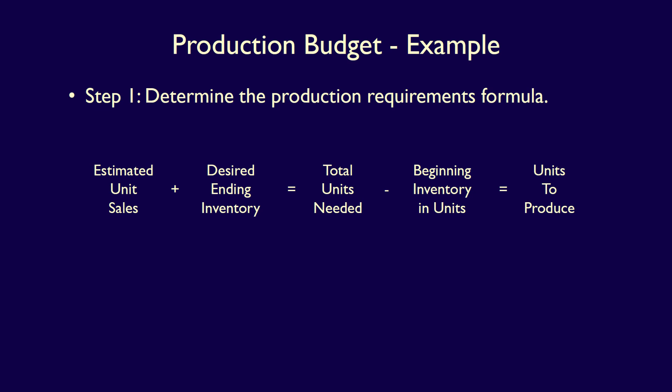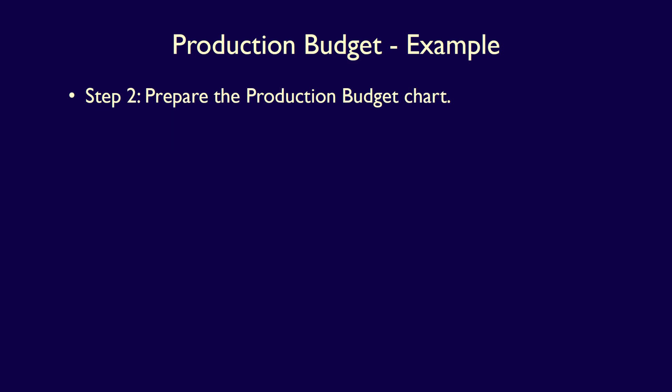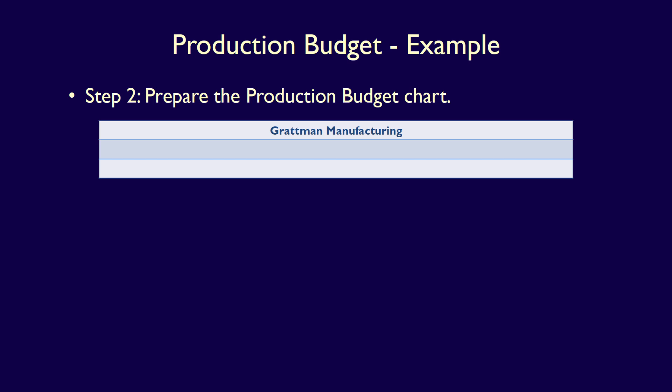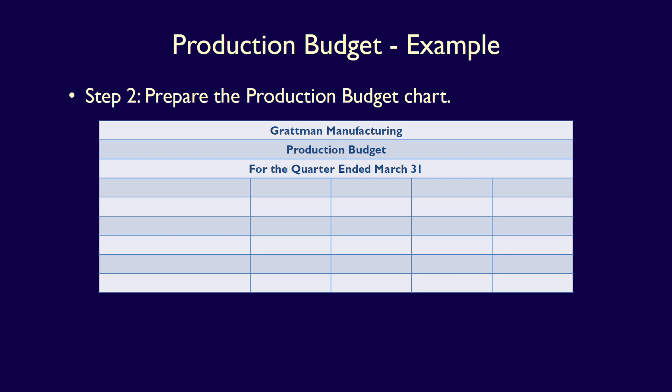Now that we have the formula, we move on to step 2, which is to prepare the production budget chart. We'll start with the title, including the company name, Grattman Manufacturing, the name of the budget, production budget, and the date for the quarter ended March 31st. We then add the necessary columns. Since we are completing the budget for the months and the quarter, we have one column for the description, three columns for the months, and one column for the quarter — a total of five columns. The headings are the description, January, February, March, and the total column, called first quarter.